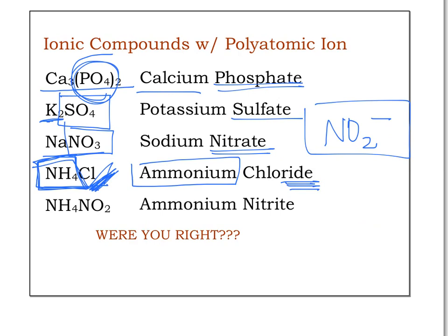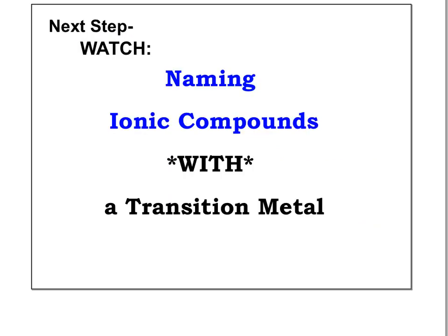Our last example has NH4 — ammonium — again as the polyatomic cation, and NO2 — nitrite — as the polyatomic anion. So this is ammonium nitrite. Now that you've practiced naming ionic compounds without transition elements, including binary compounds and those with polyatomic ions, let's move on to compounds that contain a transition element in the next video.